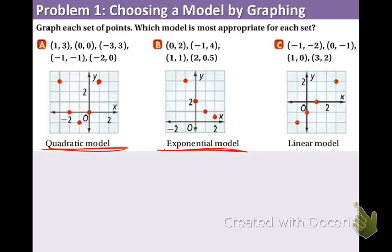In part c we see that there's a linear model. The reason why is because it's going up by the same value, the same slope each time. This is a linear model. We have now seen an example of each type of function.